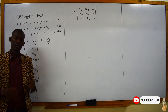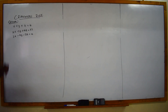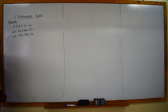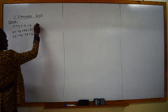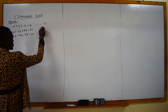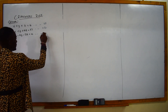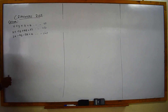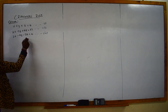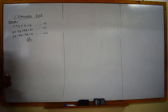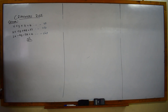So let us take an example and see how this is done. We have an equation: x plus y plus z equals 4; 2x minus 3y plus 4z equals 33; and we have the third equation. So this is equation 1, this is equation 2, and this one is equation number 3.